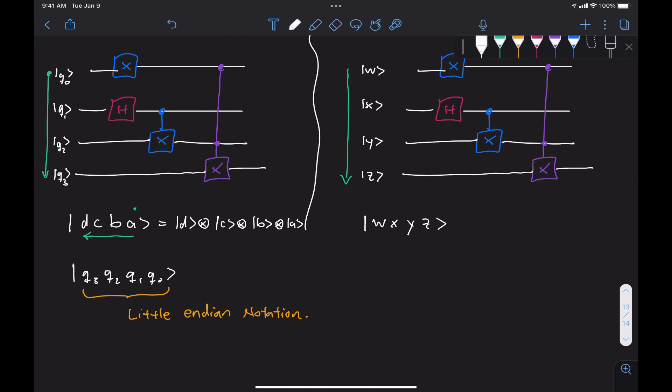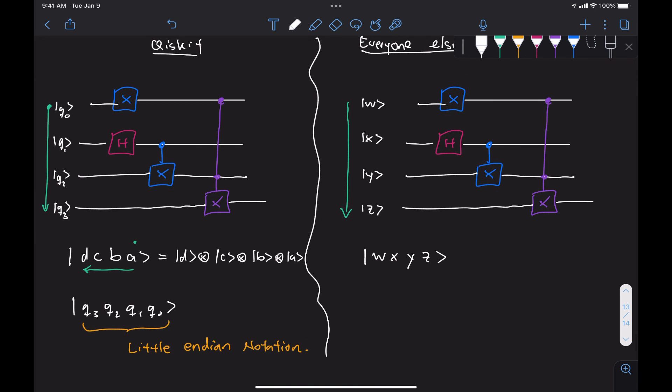And lastly, I also want to clarify that here in this representation that I call everybody else's, there's actually two ways of doing this. They're equivalent to each other, but one uses this little-endian notation, and the other one uses what is called big-endian notation. It's just the way things are arranged in the circuit itself is different.